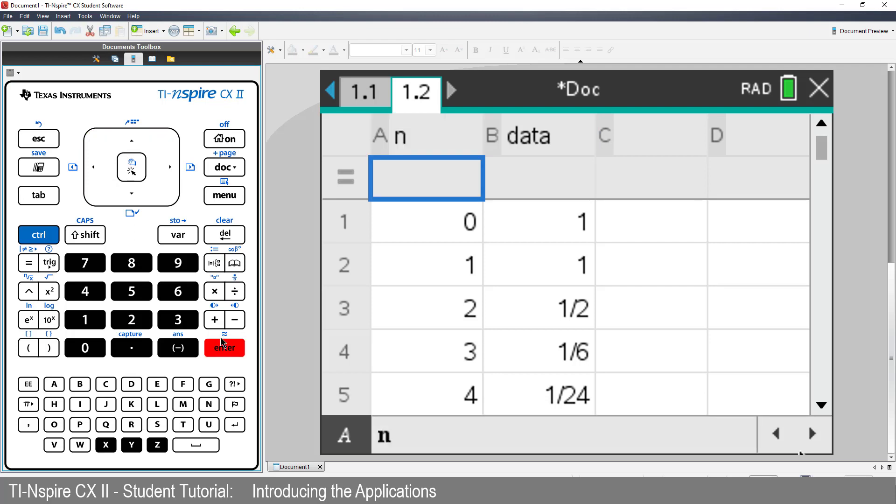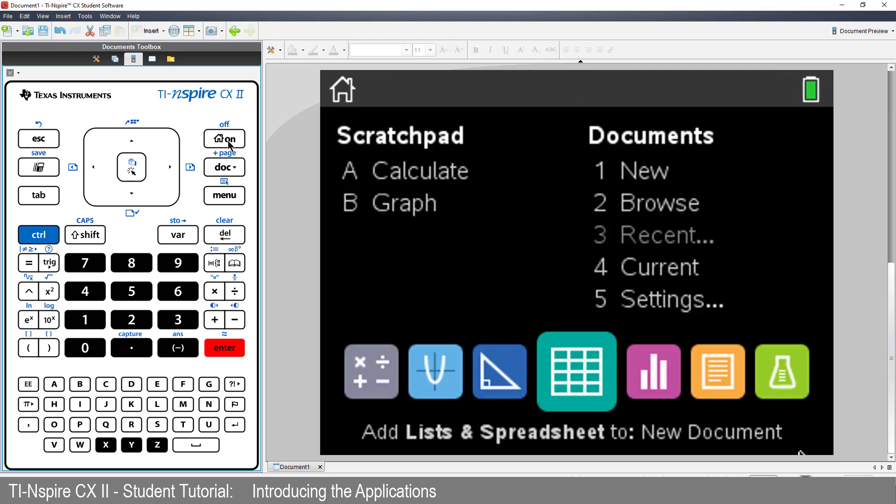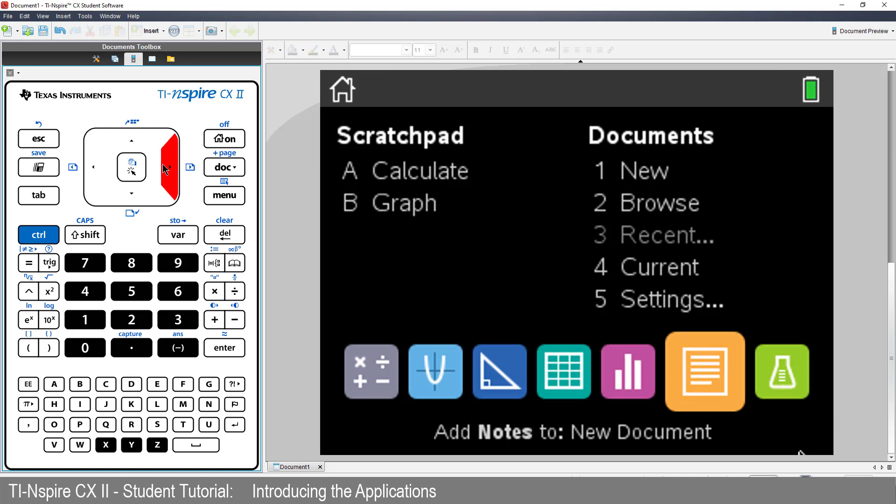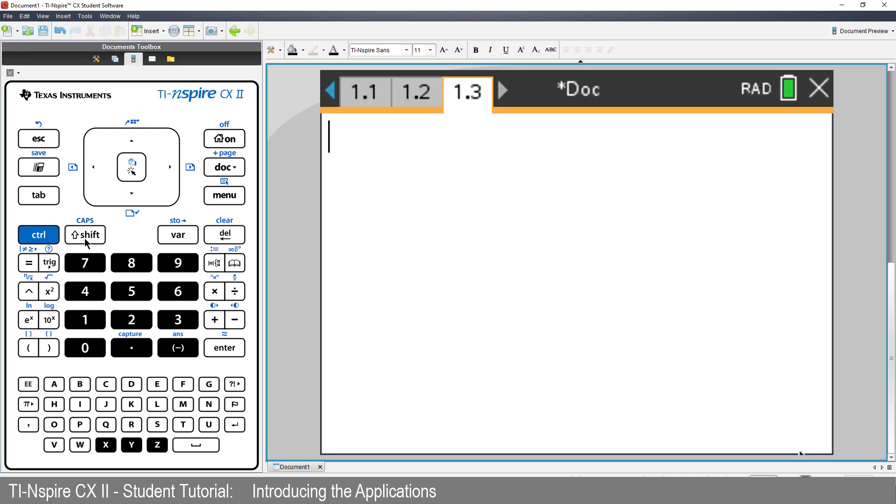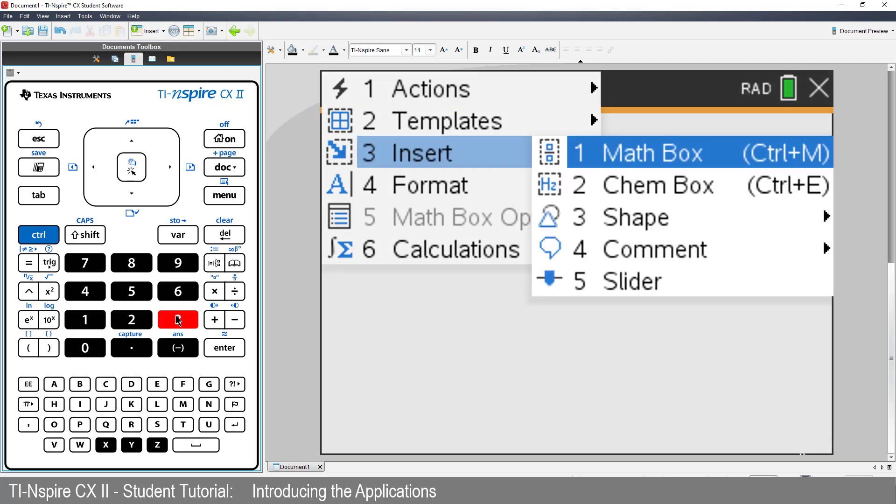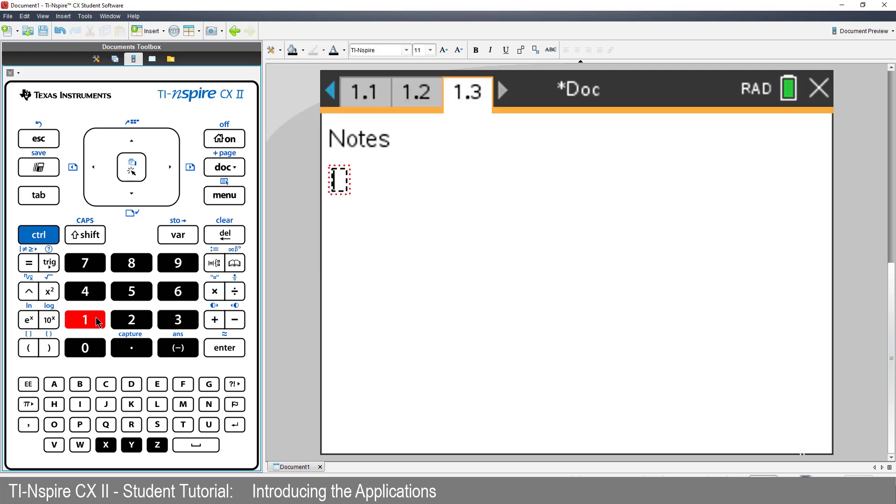We could return to the calculator application. Instead, let's insert a Notes application. As its name suggests, you can enter Notes or Text. But you can also work dynamically with calculations. Press the Menu key. Select Insert and MathsBox. Press the Variable key. And there's the data from the spreadsheet application. Select it and press Enter.